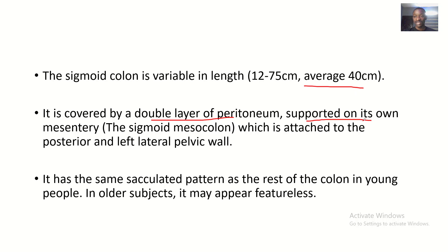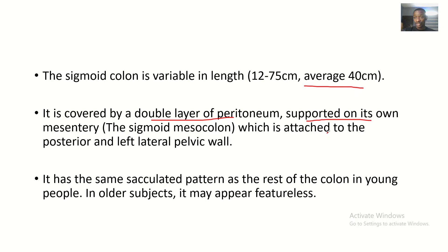The sigmoid colon is covered by a double layer of peritoneum and is supported on its own mesentery. The mesentery is like the posterior part of the digestive system organs, attaching them to the posterior pelvic wall. We'll discuss mesentery more properly when covering the embryology of the intestinal loop — herniation, rotation, return, and fixation. We have a video on that.